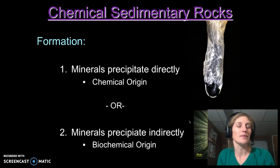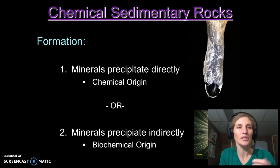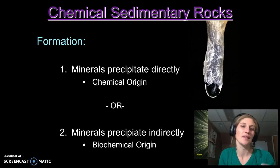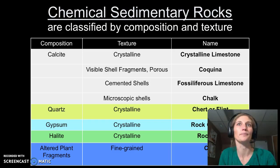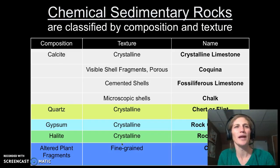The other type of sedimentary rock we have are chemical sedimentary rocks. These form either by precipitation directly from water — a chemical origin — or by organisms that are precipitating that mineral through making a shell, which is a biochemical origin. We do classify our sedimentary rocks using composition and texture — the mineral it's made of, or organic material, and the texture it has.